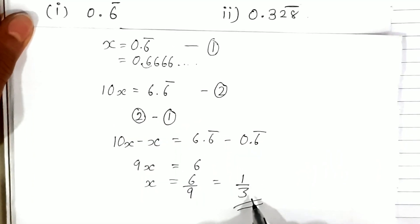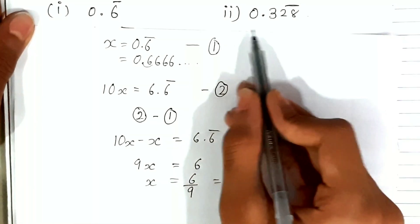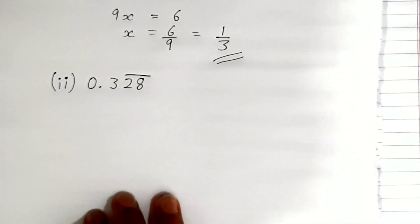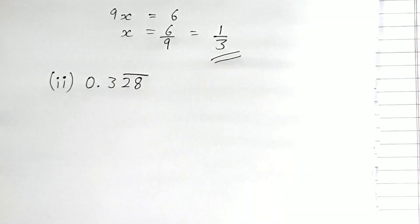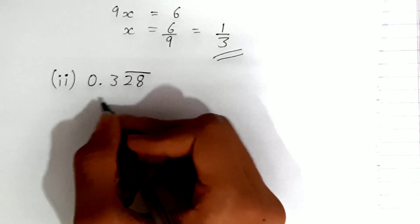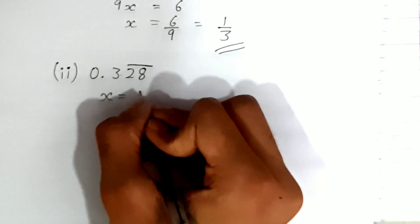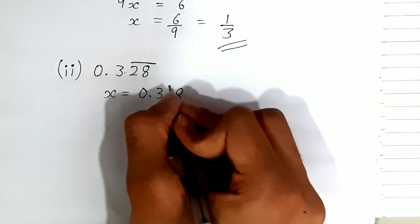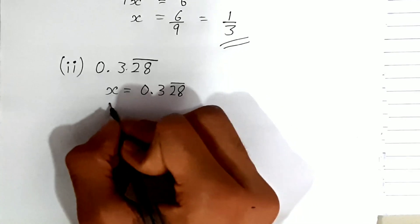Now let's try 0.3̄2̄8̄ where the bar is only on 28. First, we'll assume x = 0.3̄2̄8̄. This is not our first equation yet—we need to move every digit that doesn't have a bar to the other side of the decimal point.